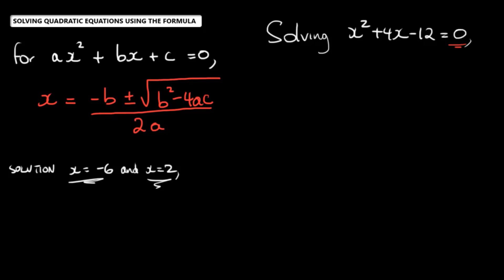A is the coefficient of x squared. So in this case, it would be one because you didn't see a number there. B would be the coefficient of x, which as you can see here, it's four. And C would be the constant. In this case, that would be equal to negative 12.